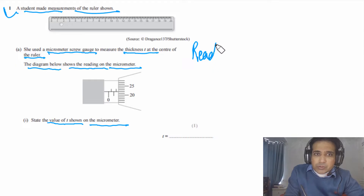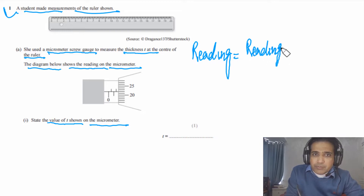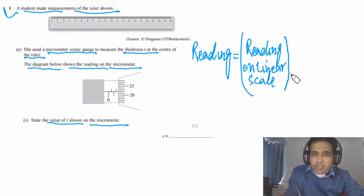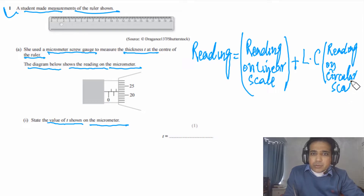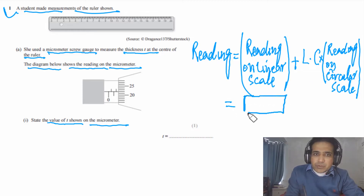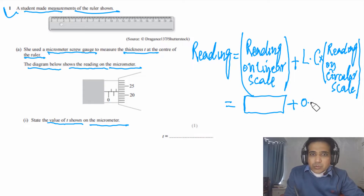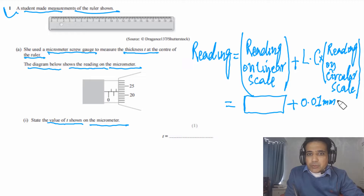The reading on a micrometer equals the reading on the linear scale plus the least count times the reading on the circular scale. For a micrometer, the least count is 0.01 millimeters. So the reading equals the linear scale reading plus 0.01 mm times the circular scale reading.